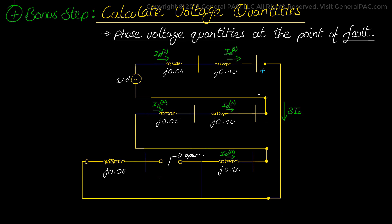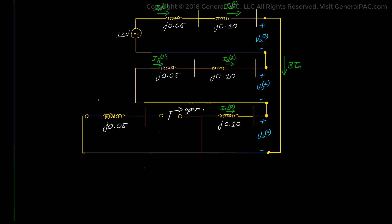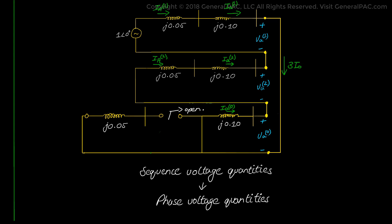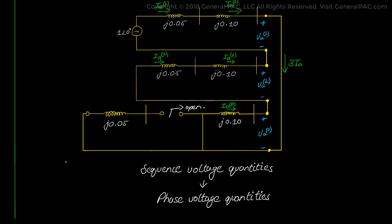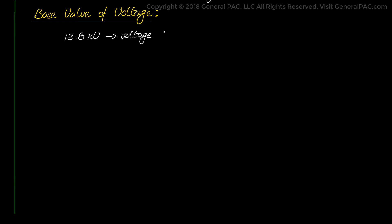We will go back to our fault sequence network and redraw it. In this figure, we want to focus on the positive, negative, and zero sequence voltages shown on the low voltage 13.8 kV fictitious bus. We want to determine the sequence voltage quantities by hand, and from those we will calculate the actual phase voltage quantities. Before moving forward, let's select a base value of voltage: V_base = 13.8 kV divided by root 3.